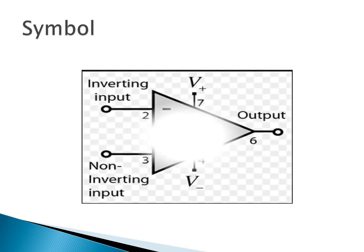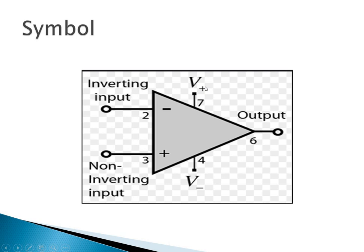Next is the symbol representation. The op amp is an 8-pin IC with two input terminals and one output terminal. Pin 2 is the inverting input, represented as minus; pin 3 is the non-inverting input, represented as positive. Pins 4 and 7 are the supply voltages — pin 7 is positive supply and pin 4 is negative supply. The output is taken from pin 6.